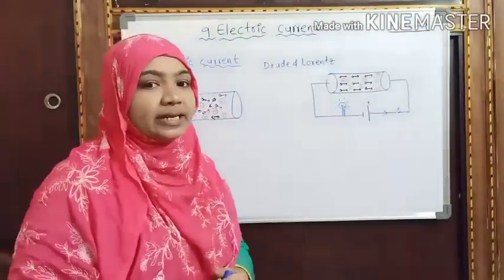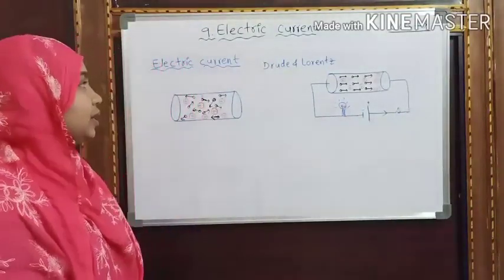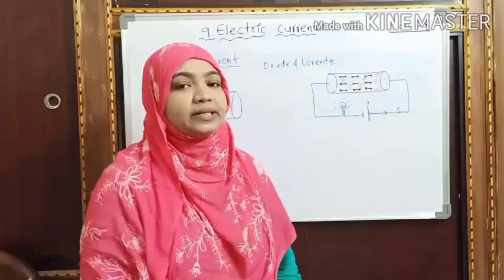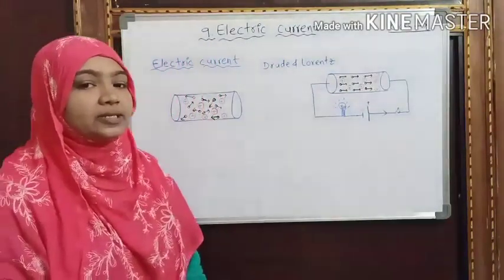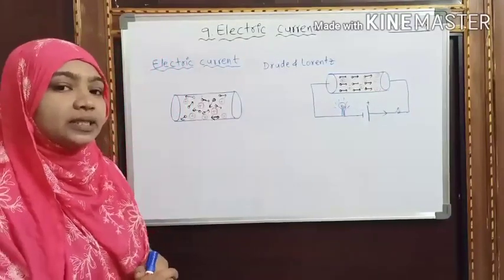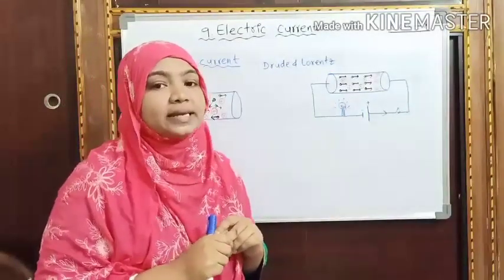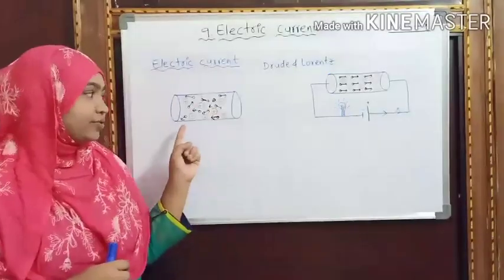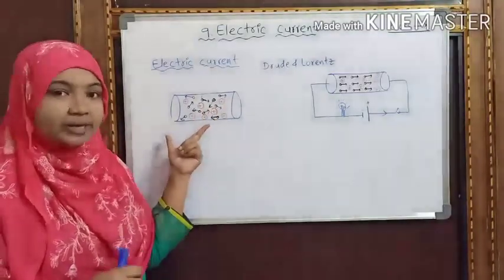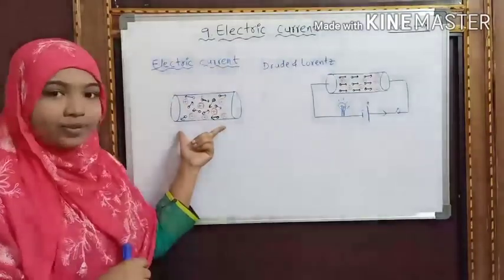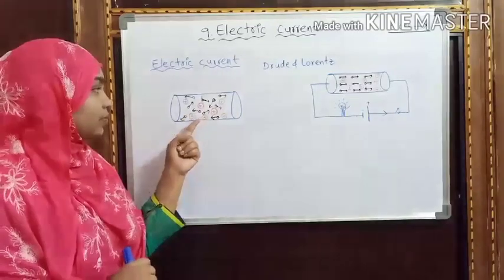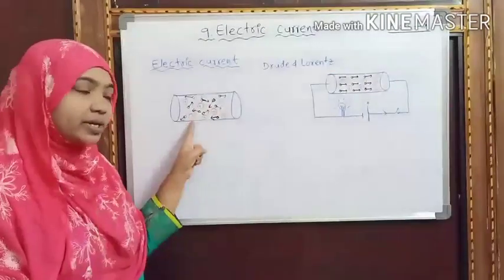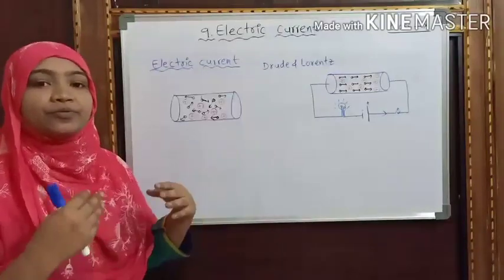Now let us try to define electric current quantitatively. In the 19th century, Lorentz and Drude proposed that all metals — conductors like metals — have a large number of free electrons, whereas positive ions are fixed at their locations. This arrangement of positive ions is known as a lattice. Here I have drawn a zoomed part of a copper wire which is in an open circuit. It has some positive ions fixed at their locations, and free electrons move randomly in any direction.